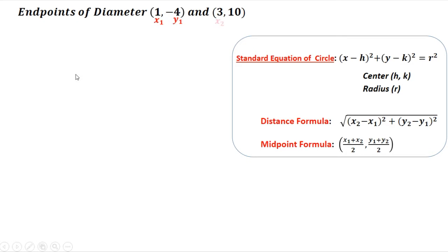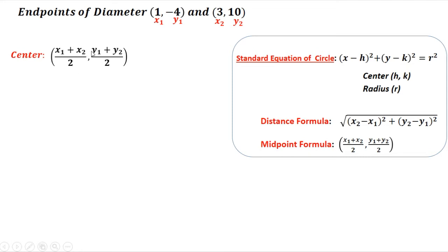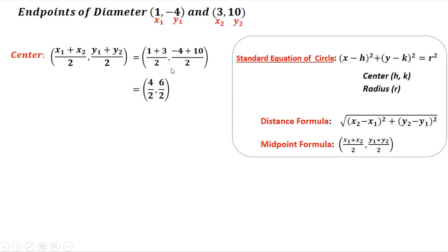First, we need to compute the center of the circle using the given points. So x₁ = 1, y₁ = -4, x₂ = 3, y₂ = 10. Using the midpoint formula, we have (x₁ + x₂)/2 and (y₁ + y₂)/2. Substituting the values: (1 + 3)/2, which gives us 4/2.